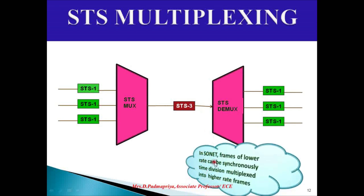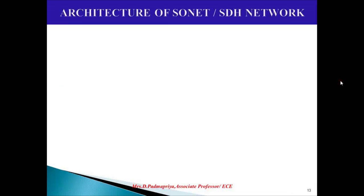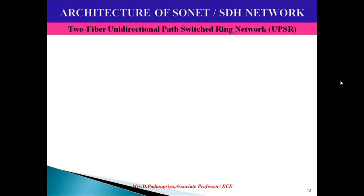Frames of lower rate can be synchronously time-division multiplexed into higher rate frames. Now let us discuss about the architecture of SONET and SDH networks. SONET architecture is divided into two types: one is the unidirectional path switch ring network, called two-fiber UPSR (unidirectional path switch ring), and the other is the four-fiber bidirectional line switch ring network, BLSR.